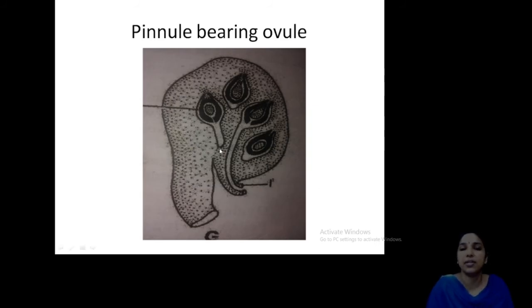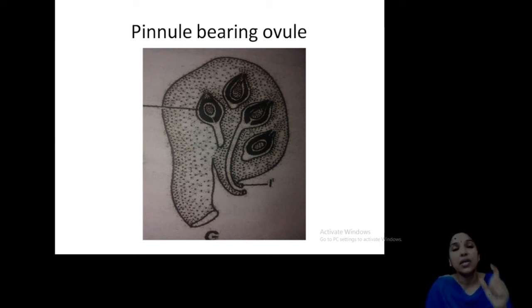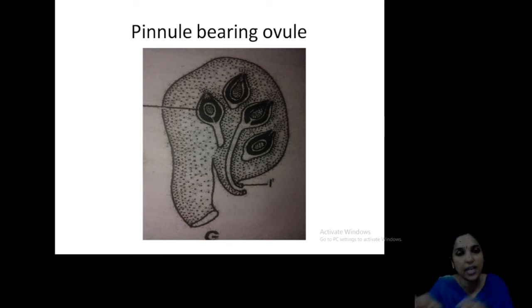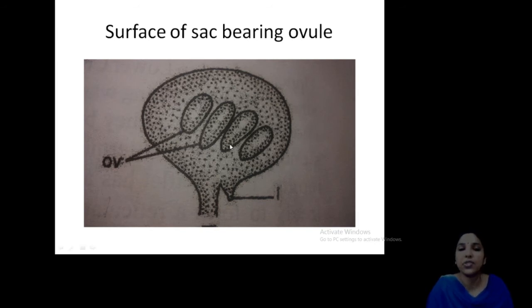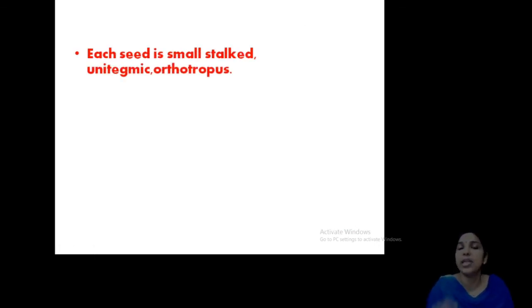In this expanded image, all parts are visible: the stalk of the seed, the nucellus part, the integument part, and the micropyle — the opening. The outer covering structure is the cupule, inside which the seeds are very much protected. This type of outer covering structure is usually present in angiosperms, which we call a fruit, with seeds inside. These common characters shared with angiosperms explain the evolutionary significance. The surface of the sac bears the ovules, and each seed is small and stalked.